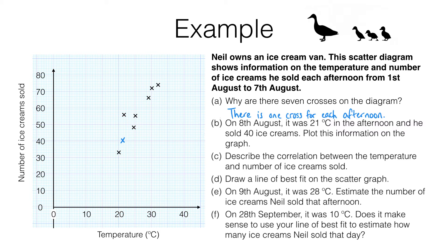In part C, we need to describe the correlation. Correlation is a measure of how closely two variables are related. In this case, it seems like the warmer it gets, the more ice cream Neil sells. This suggests a positive correlation.